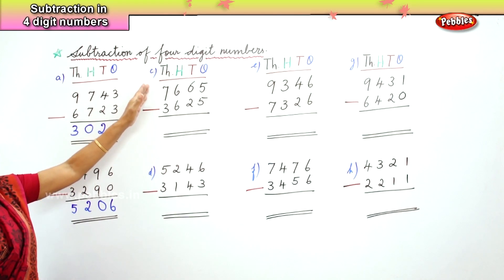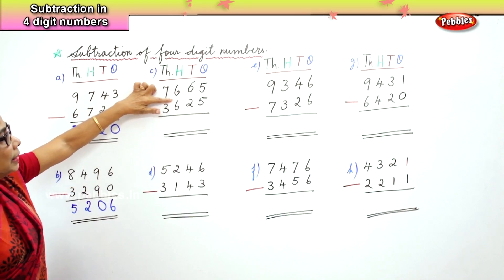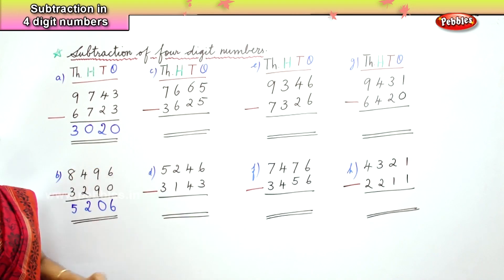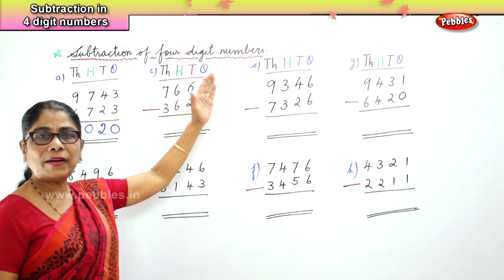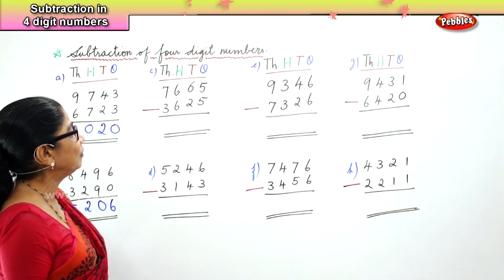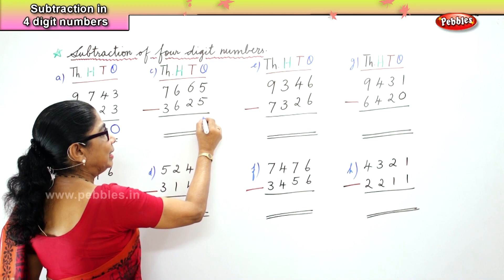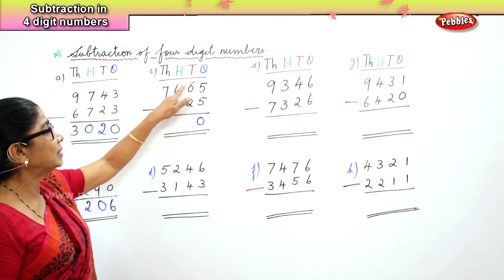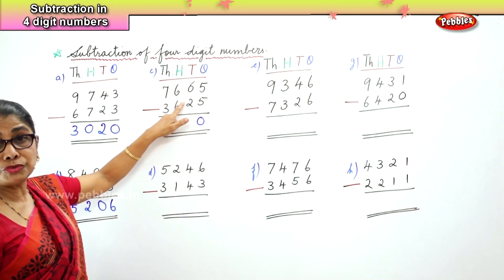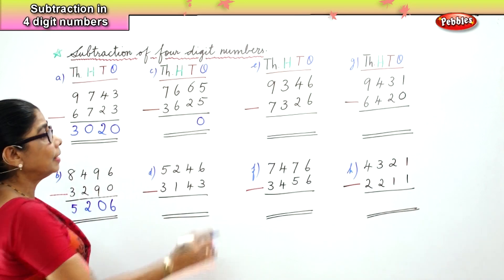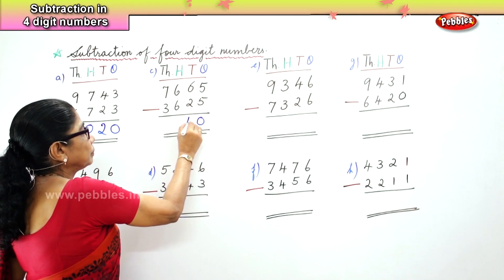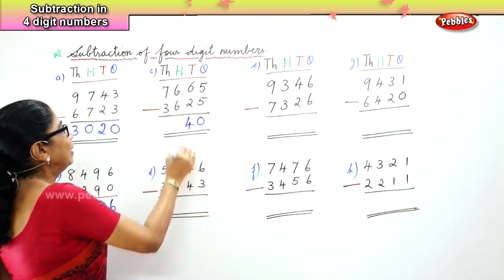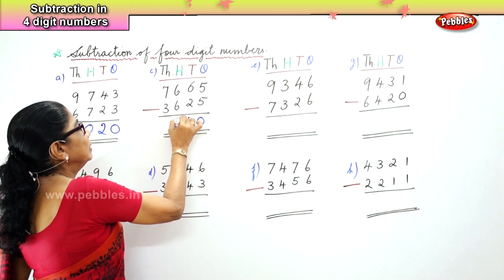Now we go to the next sum: 7,665 take away 3,625. In the ones place, 5 ones take away 5 ones — any number take away the same number is zero. In the tens place, you have 6 tens minus 2 tens — 6 minus 2 is 4. In the hundreds place, 600 take away 600 — any number take away the same number is zero.